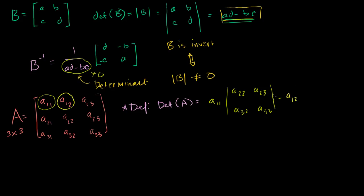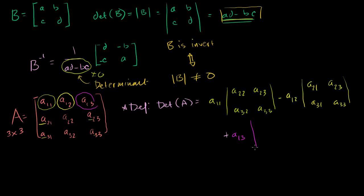Minus A 1,2 times the determinant of the matrix you get if you eliminate its column and row — so A 2,1, A 2,3, A 3,1, A 3,3. And then finally, plus A 1,3 times the determinant of its submatrix — so A 2,1, A 2,2, A 3,1, A 3,2. This is our definition of the determinant of a 3 by 3 matrix.